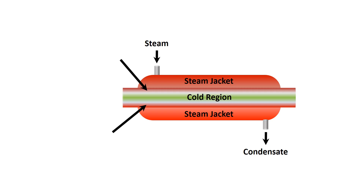In this example of a heat exchanger, we can observe the hot surface on the inside boundary of the product tube as compared to the center of the tube. Therefore, there could be surface burning of the product, and this could cause fouling.